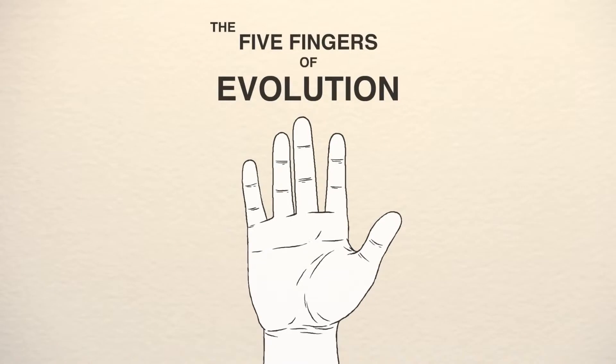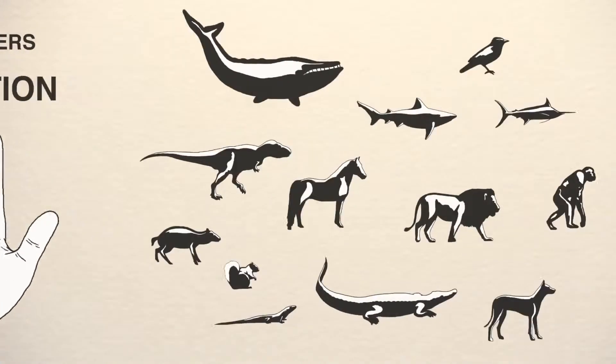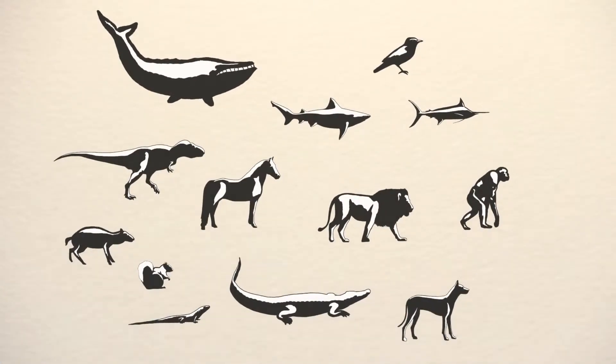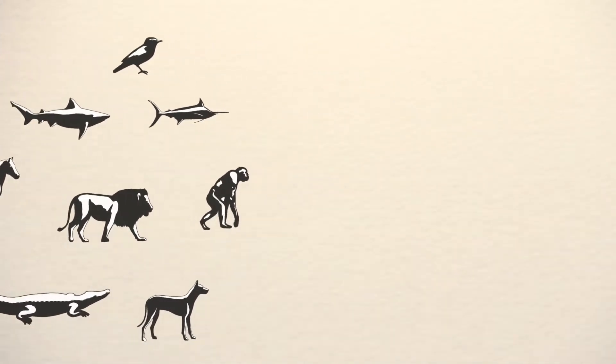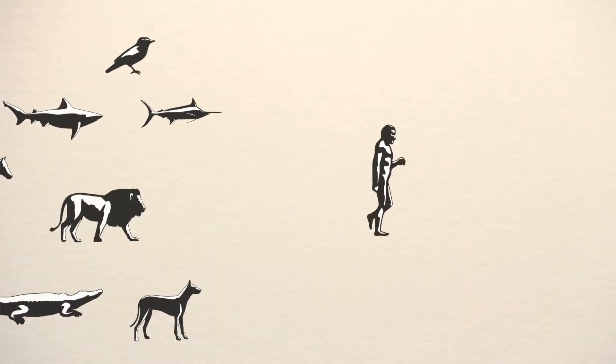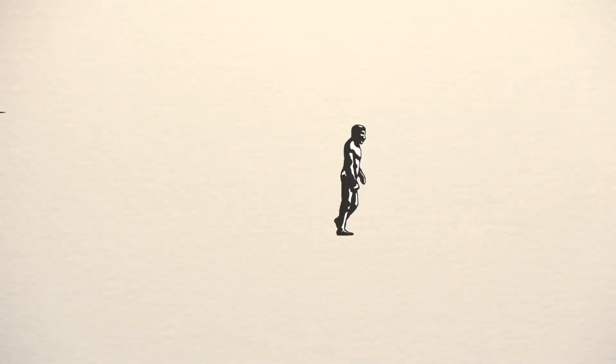The five fingers of evolution. A thorough understanding of biology requires a thorough understanding of the process of evolution. Most people are familiar with the process of natural selection. However, this is just one of five processes that can result in evolution.